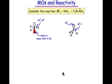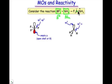Let's put these ideas into practice with a simple example. Our example involves the combination of boron trifluoride, which is going to be our electrophilic partner, together with ammonia, which is going to be our nucleophilic partner, and those will combine to make a new bonding interaction between the boron and the nitrogen atoms. What we need to do is to identify what's the HOMO and LUMO involved in this new bonding interaction.